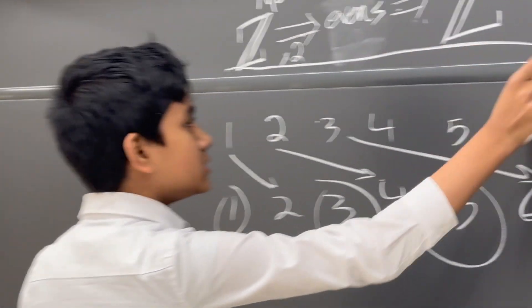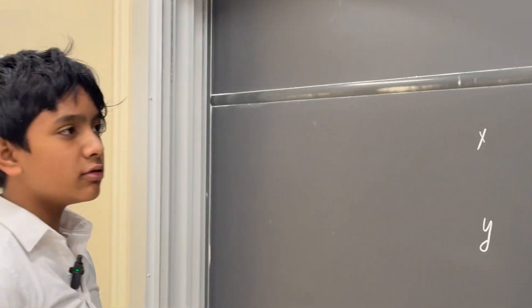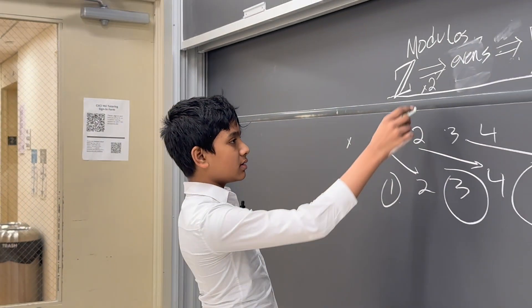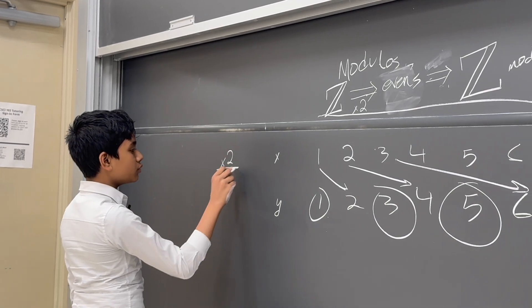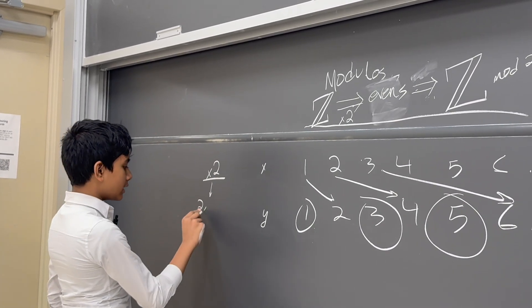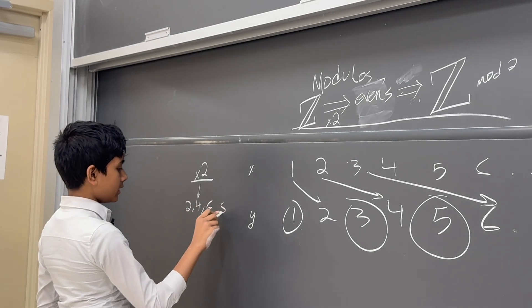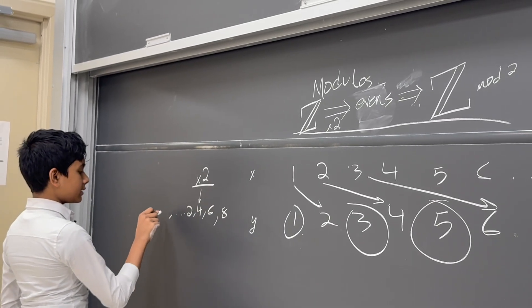So how is this an exact sequence in particular? Well, let's think about it. What's the image of multiplying by 2? Well, that's just all the even numbers: 2, 4, 6, 8, and going in the other direction too.